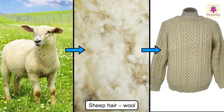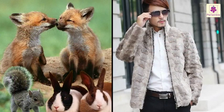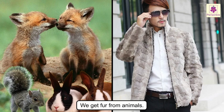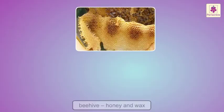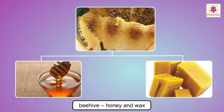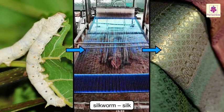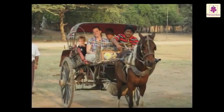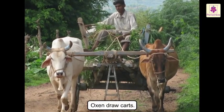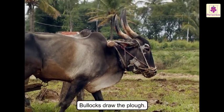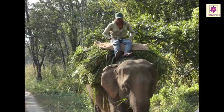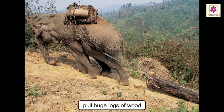The hair of sheep is used to make wool. Animal fur is also something that people use. We get honey and wax from beehives. Wax is used for making candles. We make silk cloth from the thread produced by the silkworm. Horses and oxen draw carts, and bullocks draw the plough in farms. Domestic elephants are used to carry loads and pull huge logs of wood.